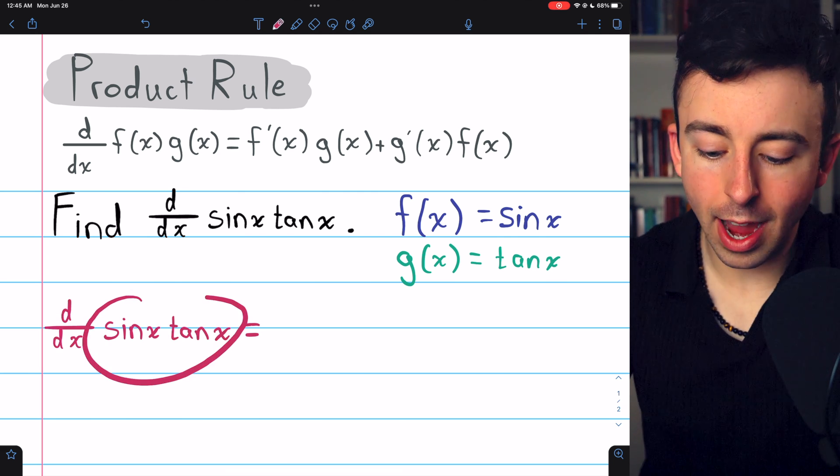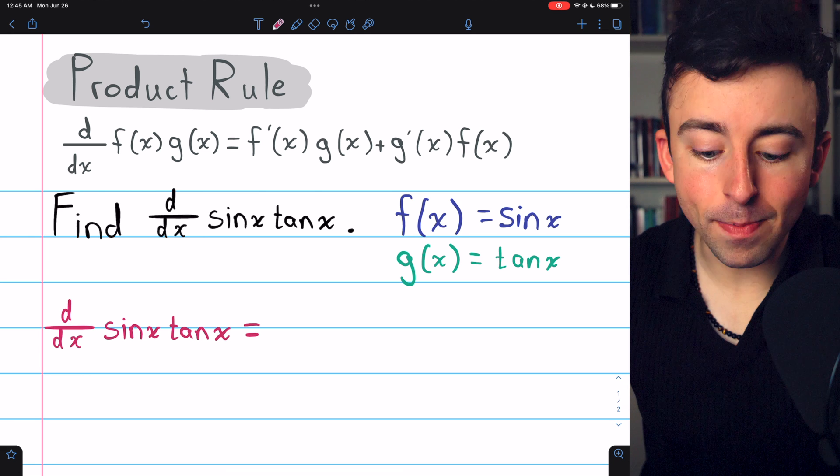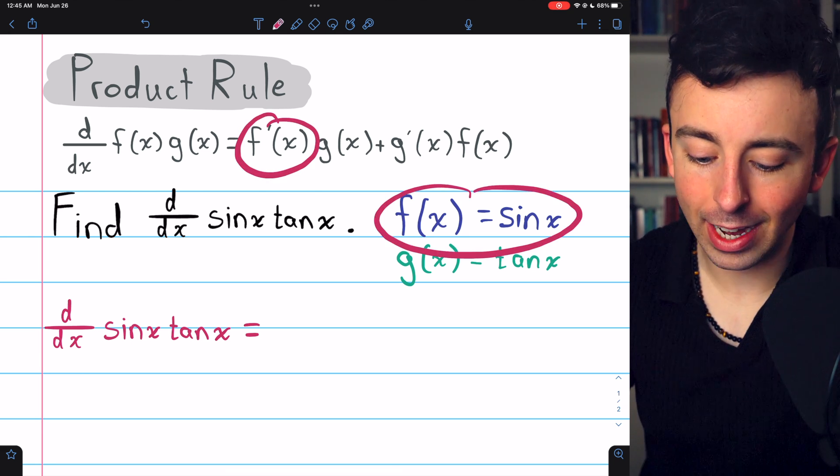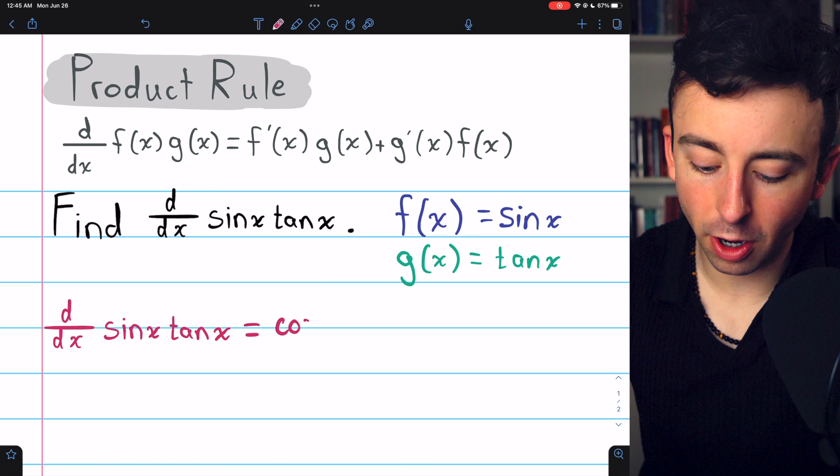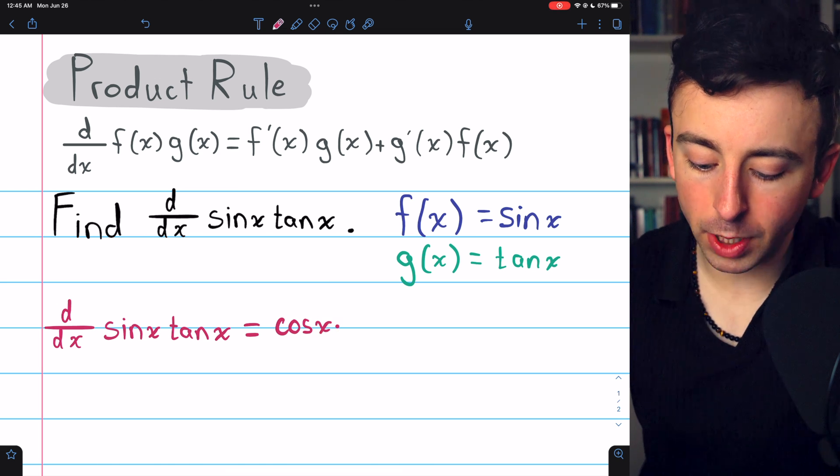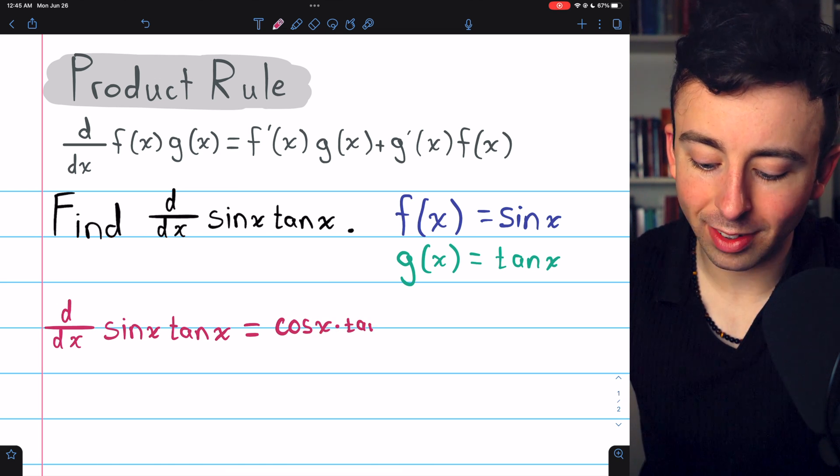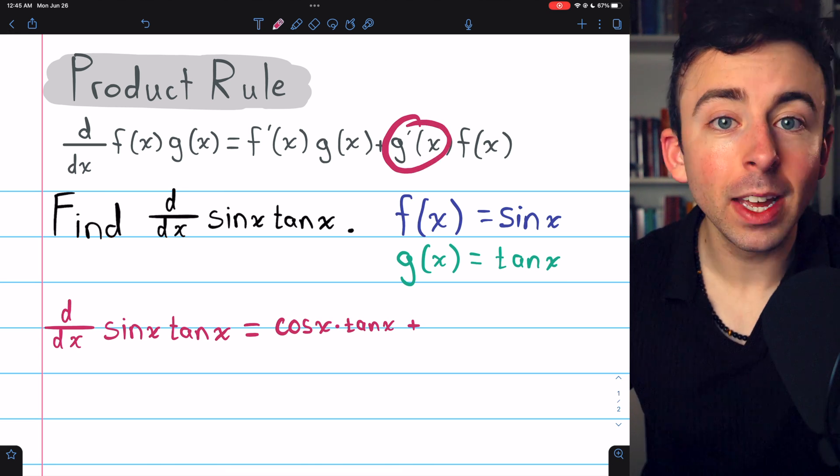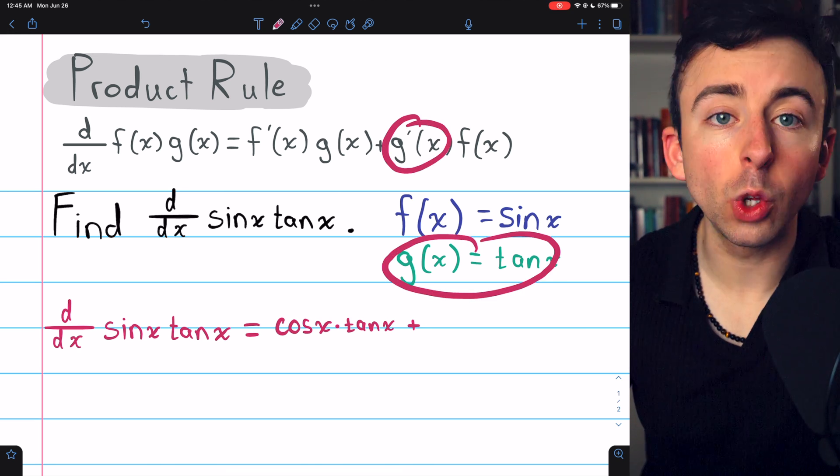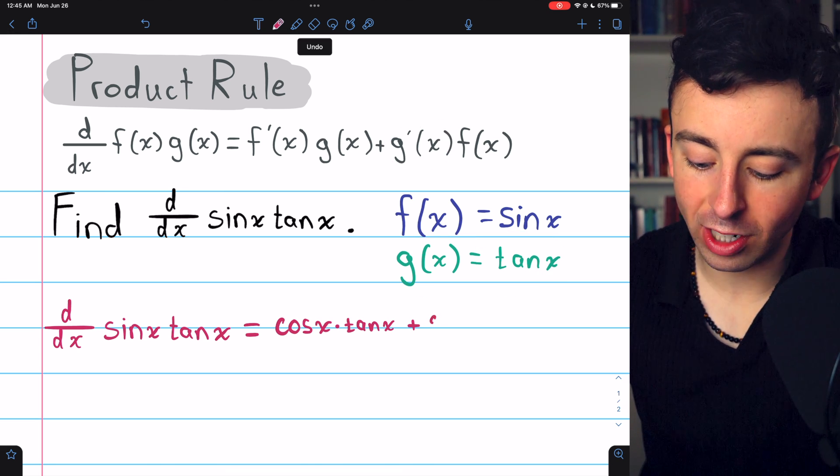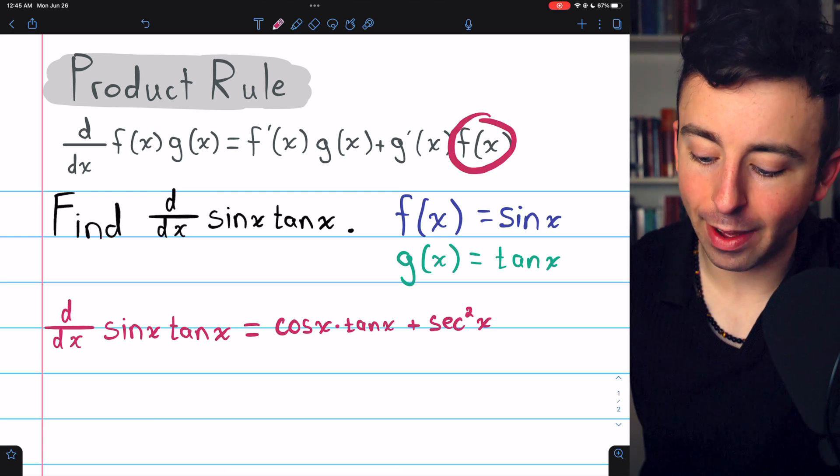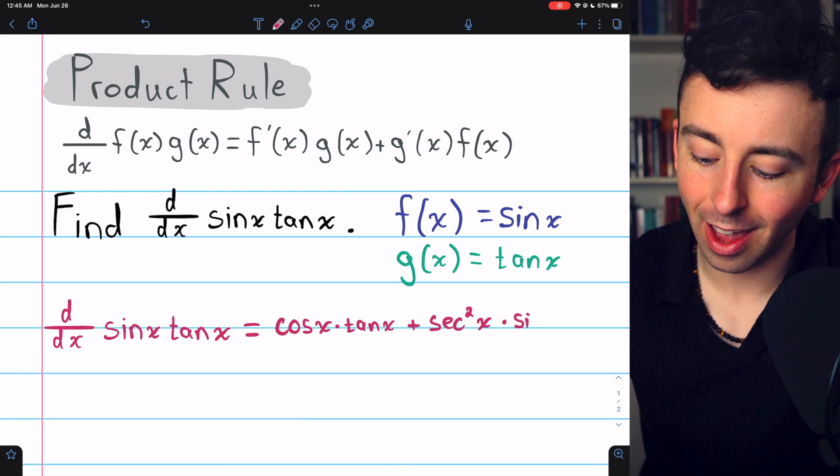Then the derivative of sine x tangent x, well we begin with f prime, the derivative of sine. The derivative of sine is cosine x and then multiply by g(x), which is just tangent of x. Then we need to add g prime, the derivative of g is the derivative of tangent, which is secant squared x, and just multiply that by f of x. Multiply that by sine x.